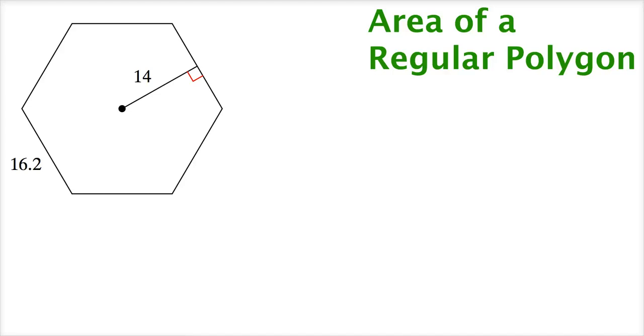This video is about area of a regular polygon. Before we go any further, we need to talk about what a regular polygon is. A regular polygon simply means that all the angles, the internal angles, are the same, have the same measurement, and all the sides are the same length. So we may say they're equiangular because the angles are the same and equilateral because the sides are the same.